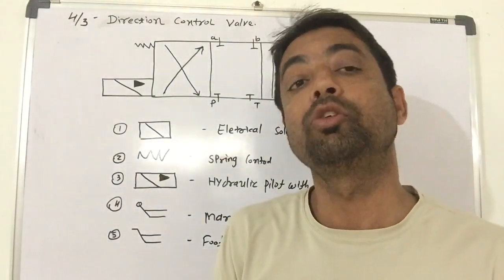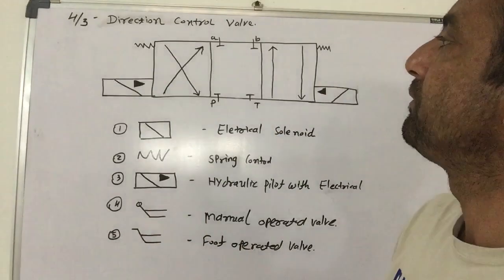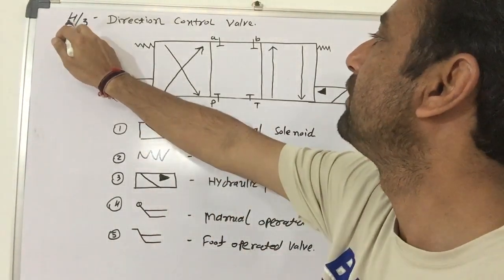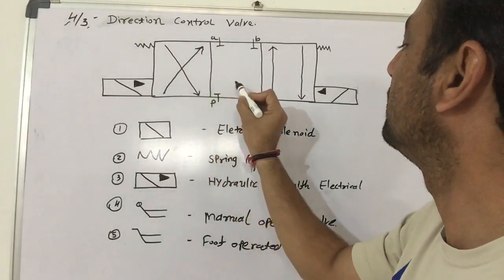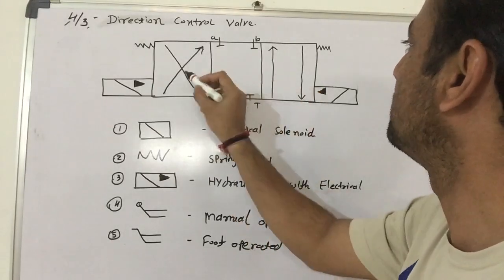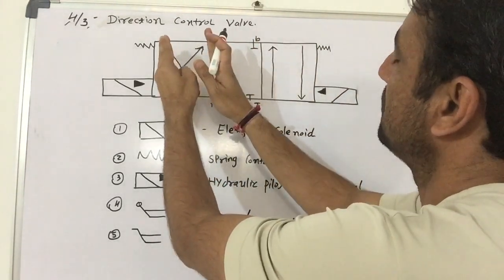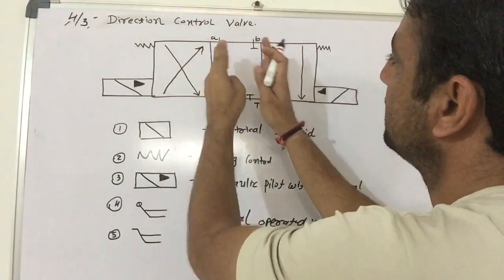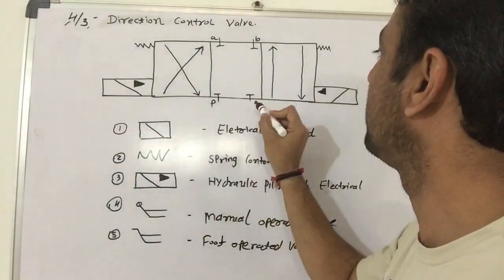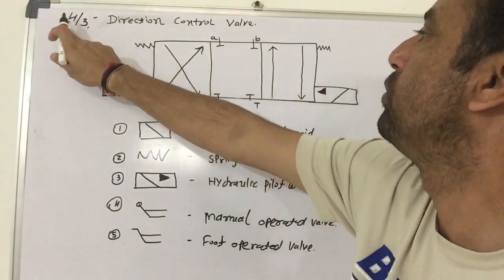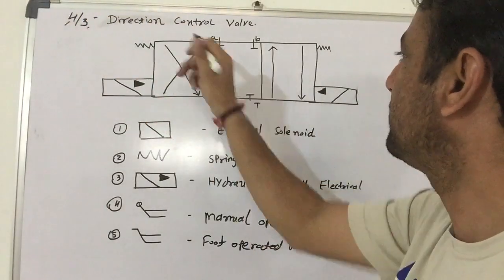What is 4 by 3? 4 is the ports, 3 is the positions. You can see that it is 1 position, this is 2nd position, this is 3 positions. Three rectangles, and you can see the 4 ports. So it is 4 by 3, the direction control valve.